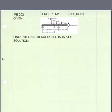I've set up my paper with the given information, finding the internal resultant loads at B, and now we write the solution. The first thing I'm going to do is draw a free body diagram.